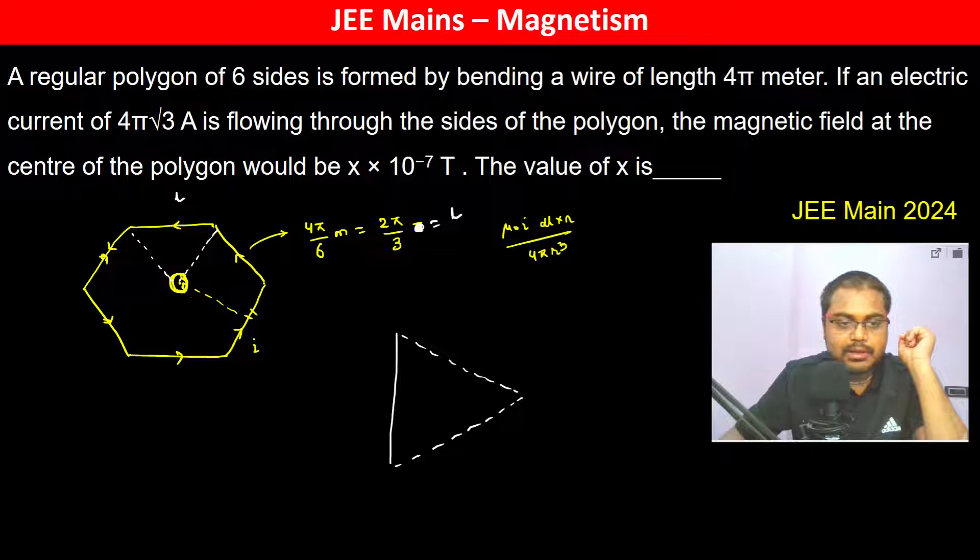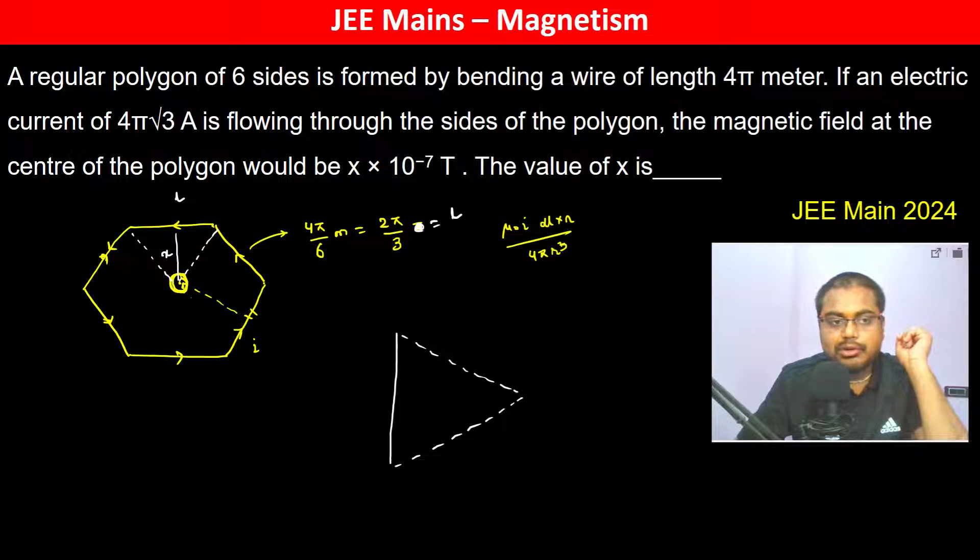This is a regular hexagon, so this angle is 60 degrees. Therefore, this is 30 degrees and this is 30 degrees. The total is 2π/3, so the half part is 2π/6 meters.